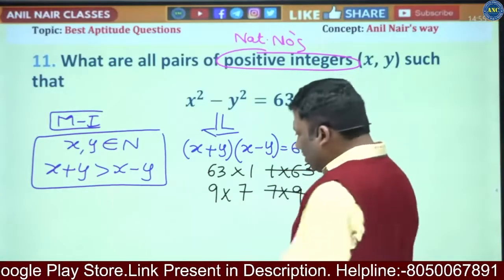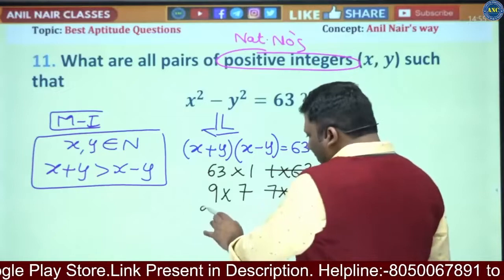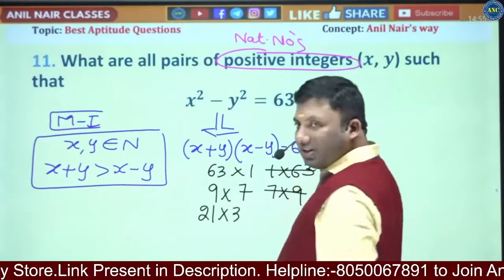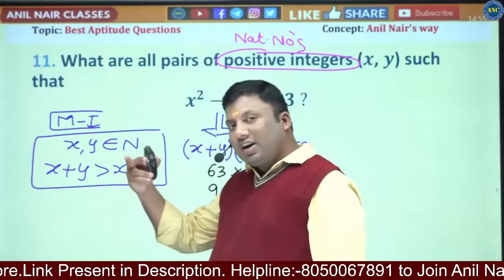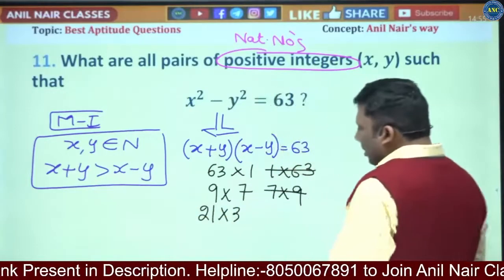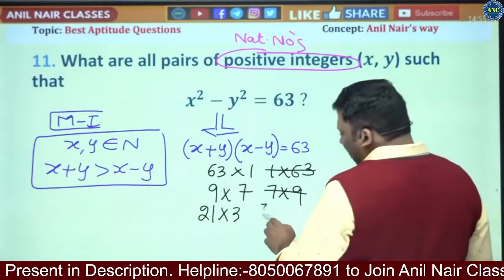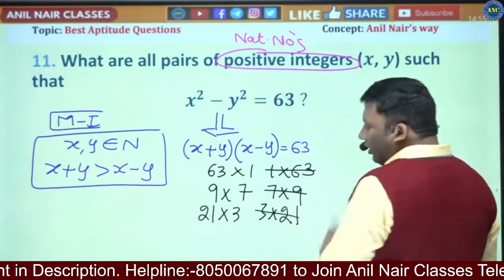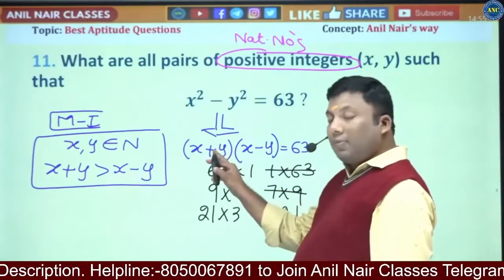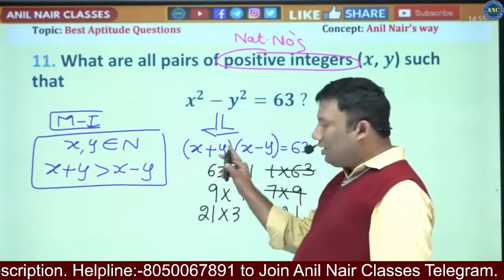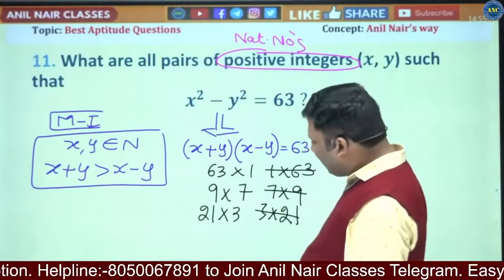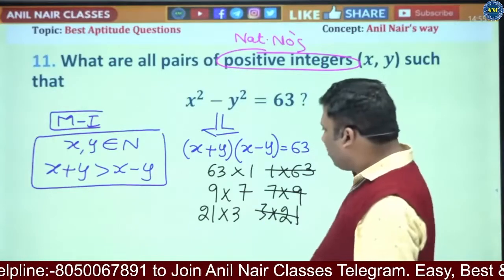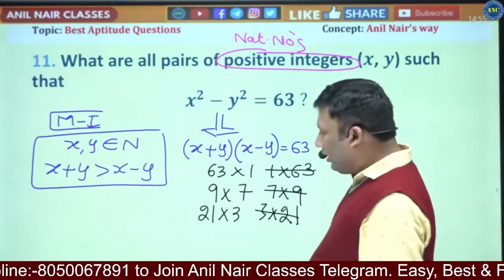We also have 21×3. The factors of 63 are 1, 3, 7, 9, 21, and 63. We will not write the reverse 3×21, because the sum of two natural numbers is always greater than their difference. So our valid factor pairs are: 63×1, 9×7, and 21×3.